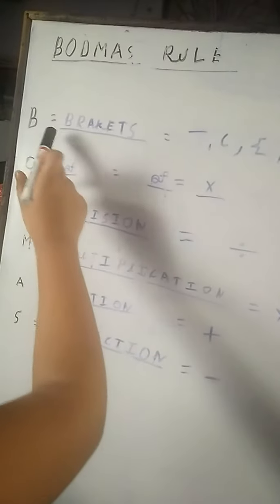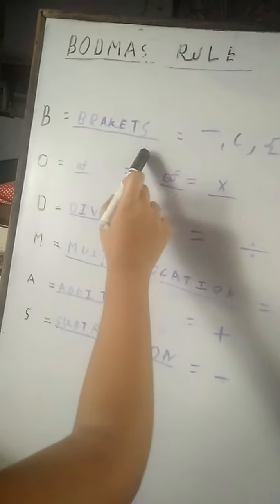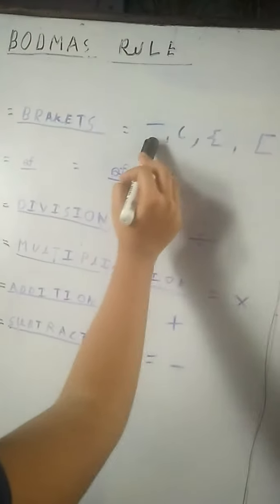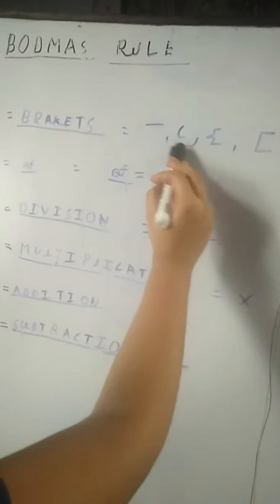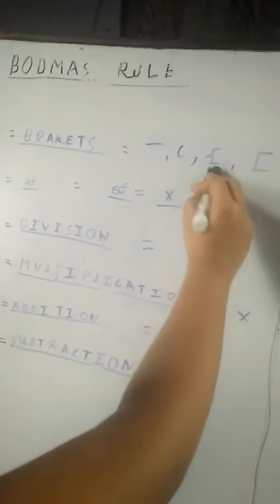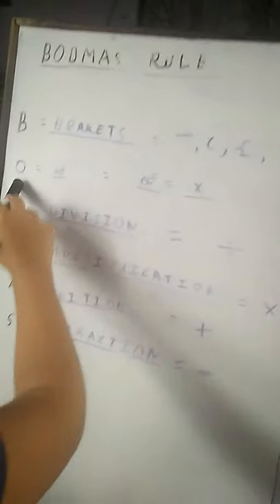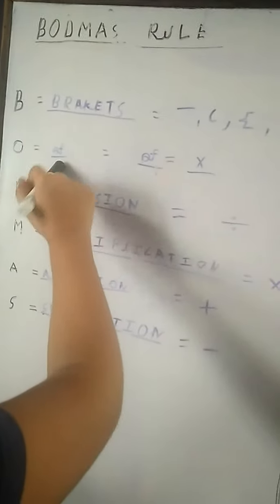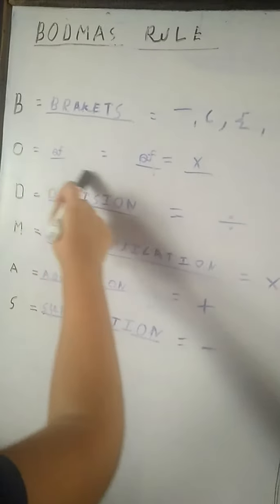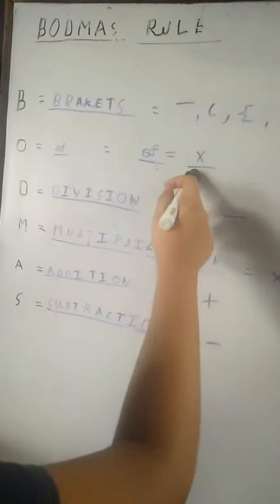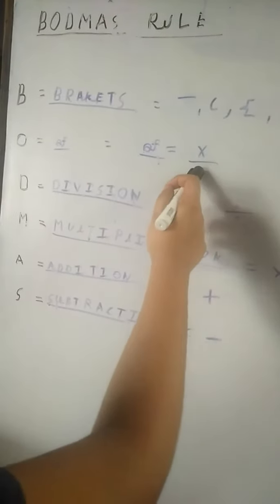We are looking for B — B stands for Brackets. We solve the type of bar first, then small brackets, and then big brackets. Next we look for O, which stands for Off. Off means multiplication — we have to multiply before moving on.